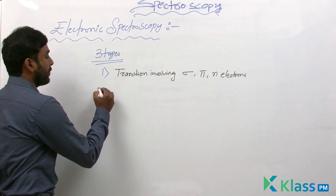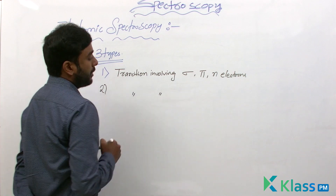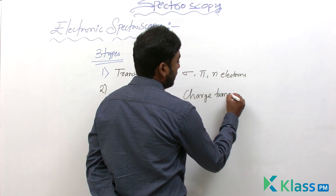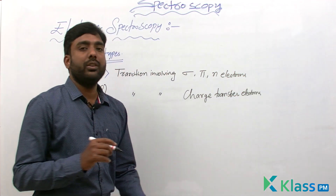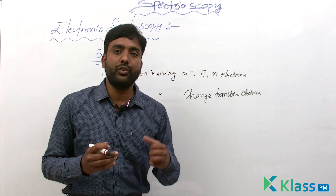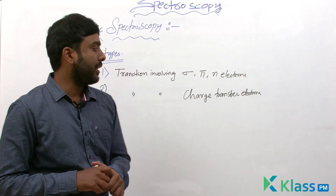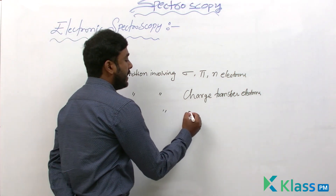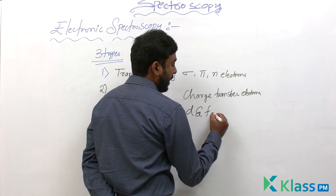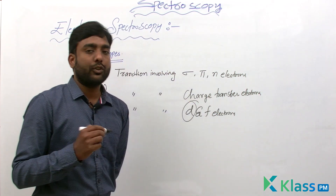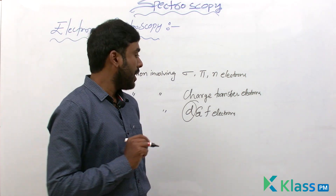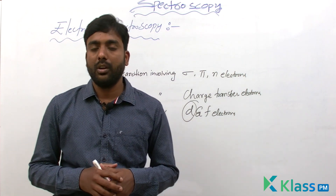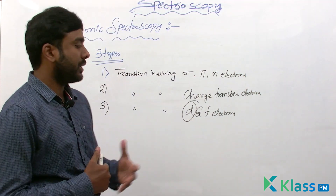The second type is transition involving charge transfer electrons. We will see the details of charge transfer later. The third type is transition involving D and F electrons — electrons present in the D orbitals and electrons present in the F orbitals. If the transition occurs in D or F electrons, it falls in the third category.